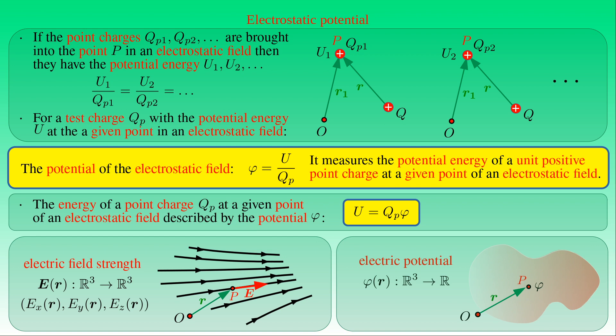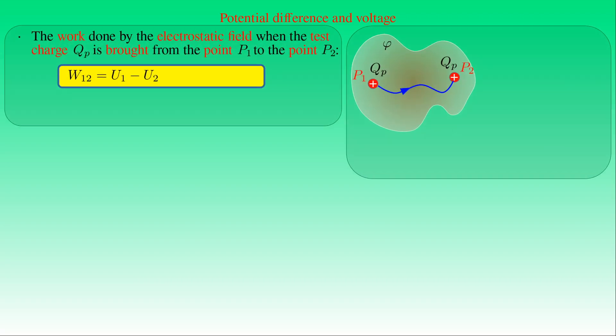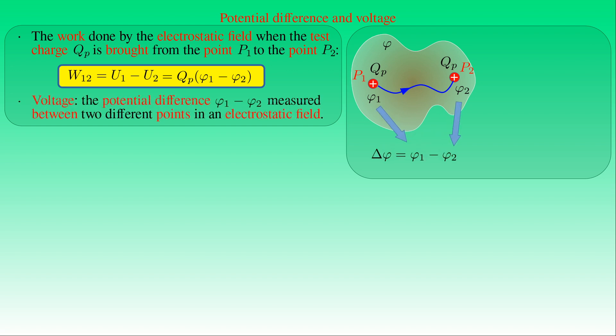In practice it is more straightforward to determine the spatial distribution of an electrostatic field using potential. If test charge QP is brought from point P1 to point P2, the work W done by the field equals the difference between the potential energy of QP at P1 and P2. This difference can be written as QP times the difference between potential phi1 and phi2 at points P1 and P2 respectively. In other words, the work done by the electric field equals the product of the displaced charge and the potential difference — also called voltage — between the initial and final points.